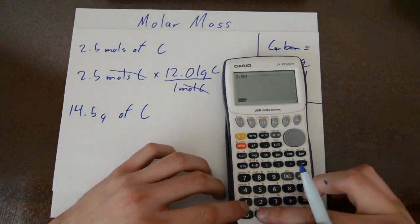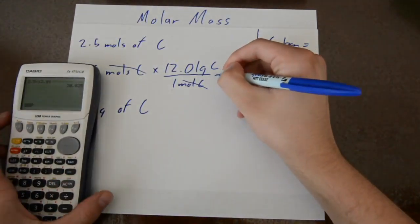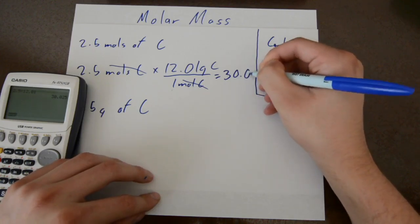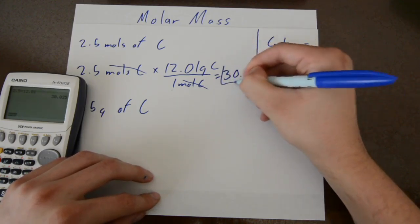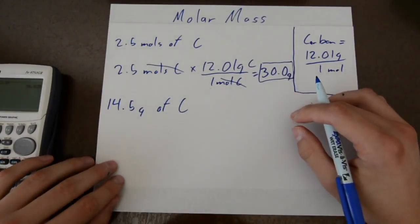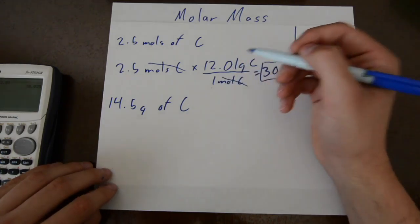2.5 multiplied by 12.01 and you get 3.0 grams of carbon in 2.5 moles of carbon. So you can do the opposite of that and you go from grams of carbon into moles of carbon.